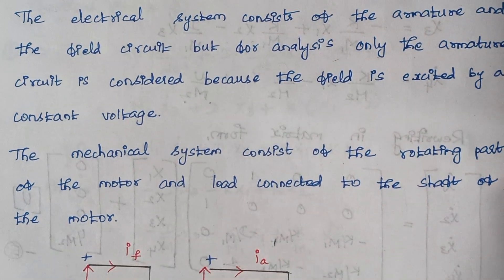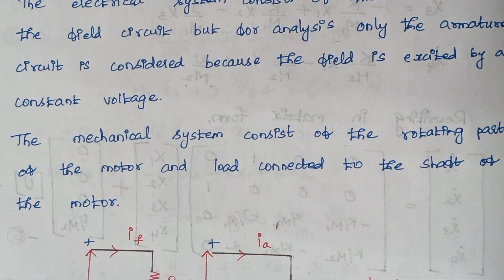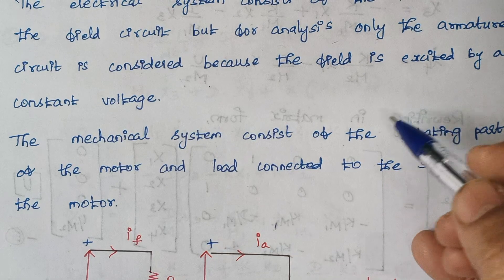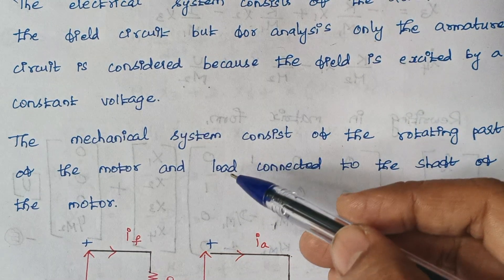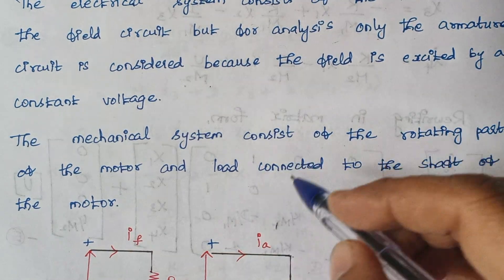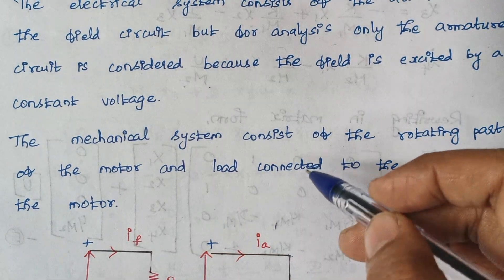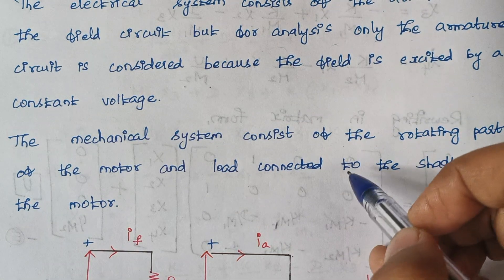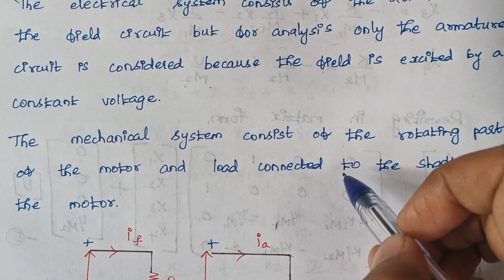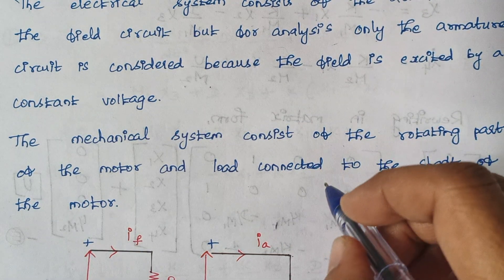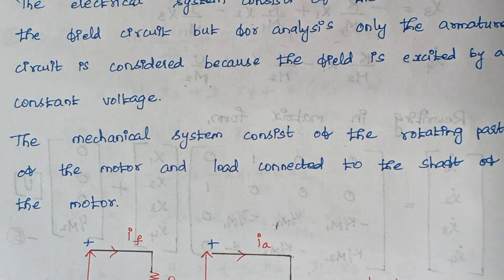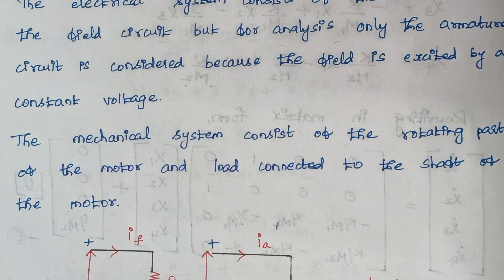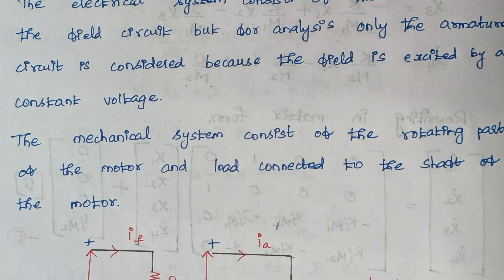The mechanical system consists of the rotating part of the motor — that is, the shaft and the load connected to the shaft. So the mechanical system is contributed by the shaft and the load which is connected to the shaft.